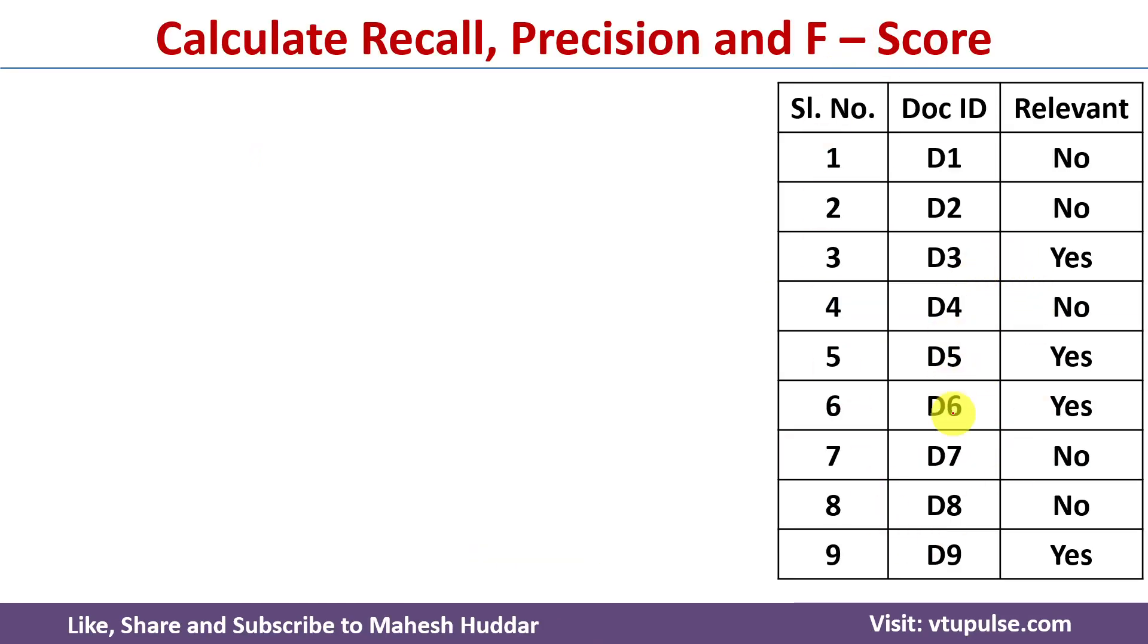The table given lists all the documents retrieved by an algorithm. In this case the algorithm has retrieved 9 documents that is D1 to D9. If the relevant column contains yes, it means that the document is relevant otherwise the document is irrelevant.